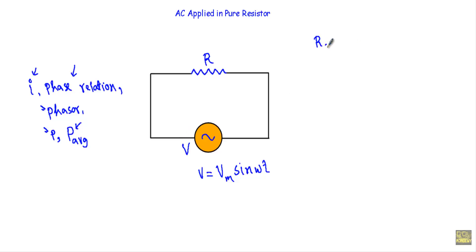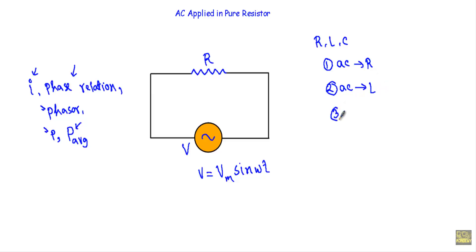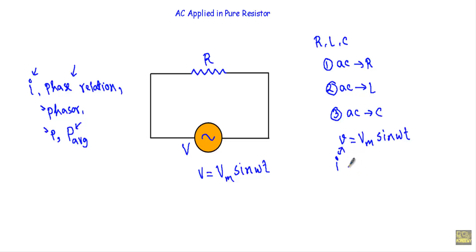Resistance, inductance, and capacitance are the three basic elements of any electrical network. In order to analyze any electrical circuit, you must know what will happen if you apply an alternating quantity in a pure resistive, pure inductive, or pure capacitive circuit. In all these three circuits, I will apply an alternating voltage V equal to Vm sin omega t. You must know the equation of current, the phase relationship between voltage and current, how to draw the phasor diagram, and how much power will be absorbed by the resistor, inductor, and capacitor.